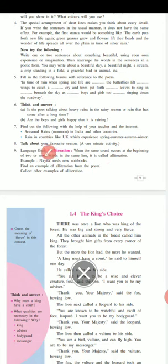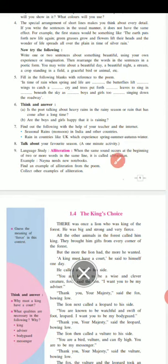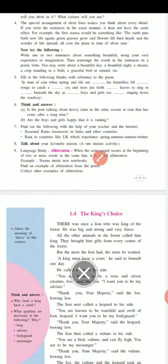Your homework is on alliteration. Alliteration comes in a poem. It is a figure of speech. When the same sound occurs at the beginning of two or more words in the same line, it is called alliteration. For example: 'Naina needs new notebook.' Find an example of alliteration from the poem and collect it. In figure of speech, alliteration is commonly asked for one or two marks.